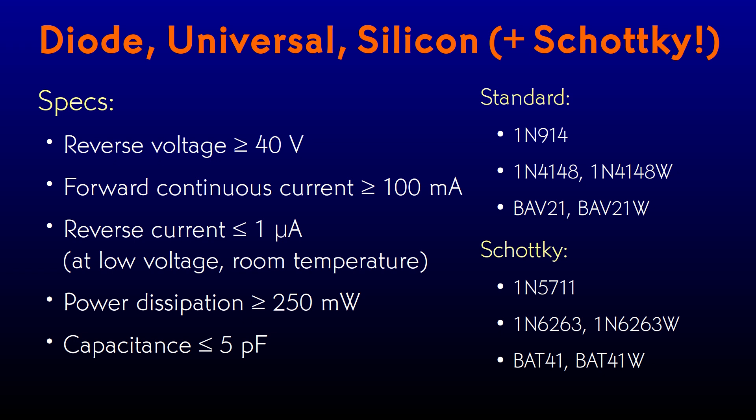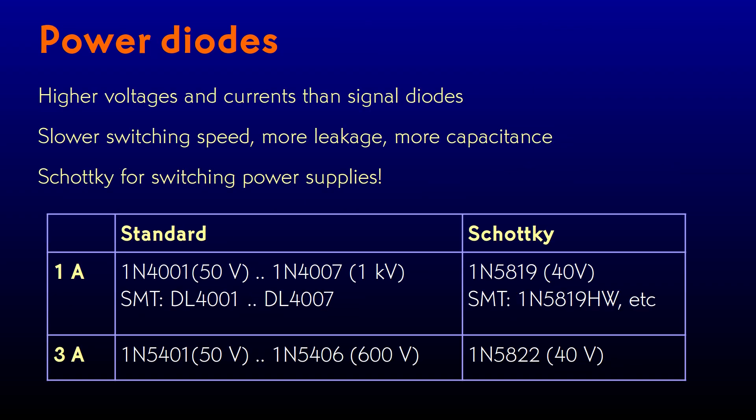I should also talk about some more specialized diodes. There are big, beefy diodes that get used in power supplies, in motor drives, as freewheel diodes for inductive loads, that sort of thing. There's a big series that can do an ampere of forward current. The 1N4001 series are standard silicon diodes, with reverse voltages ranging from 50 volts up to a kilovolt. If you need a little more, the 1N5401 series do 3 amperes, with reverse voltages up to 600 volts. The 1-amp parts have surface mount variants. The 3-amp parts mostly don't, because their heavy gauge wire leads carry heat out of the part.